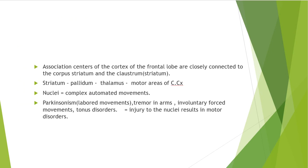The association centers of the cortex of the frontal lobe are closely connected to the corpus striatum and the claustrum. From the striatum, pathways proceed to the pallidum, from the pallidum to the thalamus, and further to the motor areas of the cerebral cortex. The nuclei employ these pathways for participation in programming of complex automated movements.